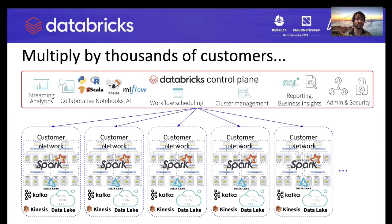The advantage of building your system this way is that a customer's data never needs to leave their account, which is particularly important for security-sensitive customers. Our control plane is built on top of Kubernetes and we leverage a variety of open source projects such as Envoy, MLflow, Koalas, Nginx, Consul, Redis, Prometheus, CoreDNS, Jaeger, and so on.